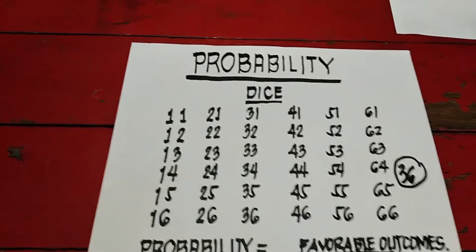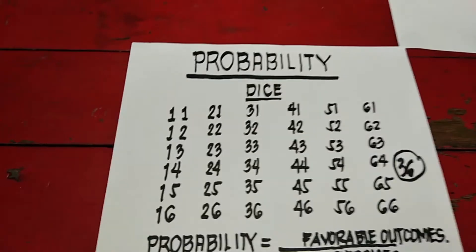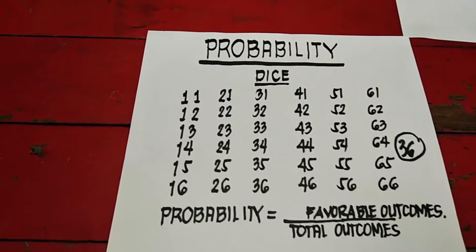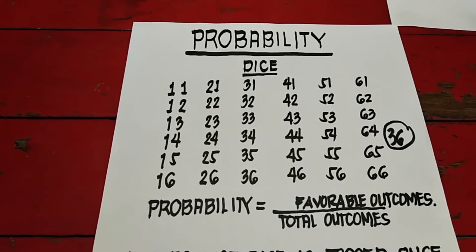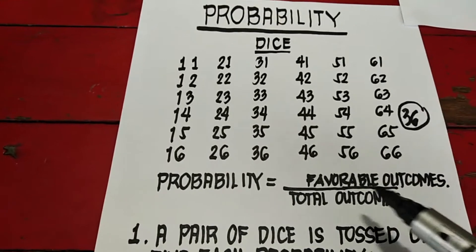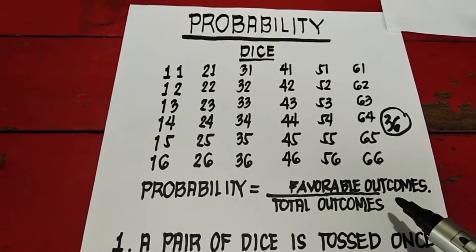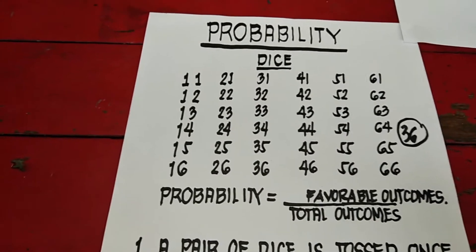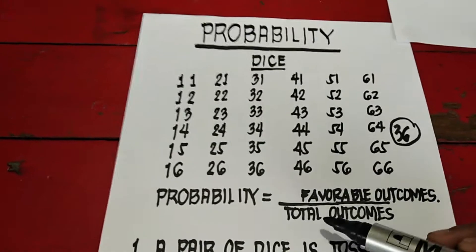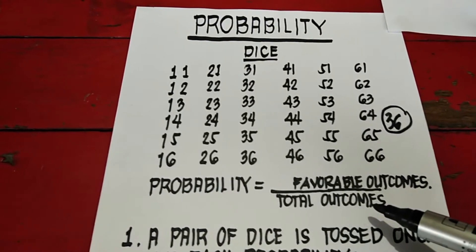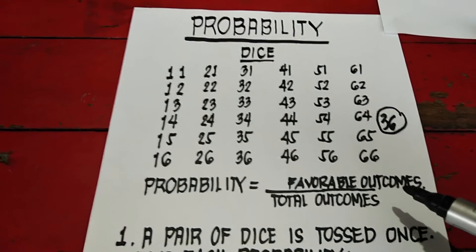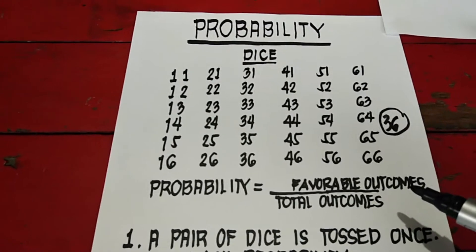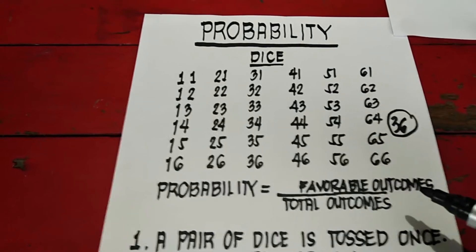Yan ang total outcome ng dice pag nag-toss ka. Ang pinatanong is probability. Ano ba yung probability? Probability is equal to favorable outcomes divided by the total outcomes. Yan yung formula natin.